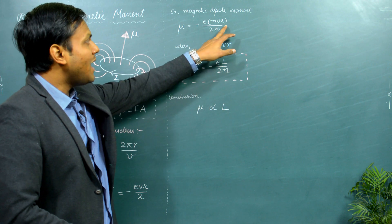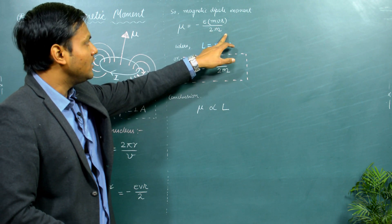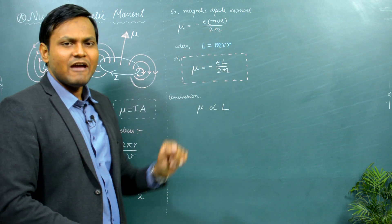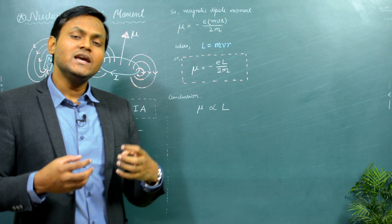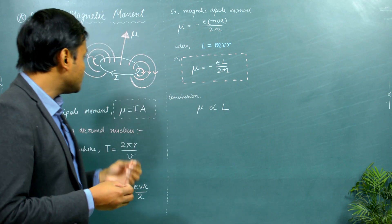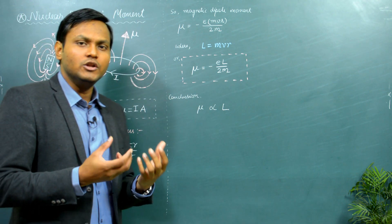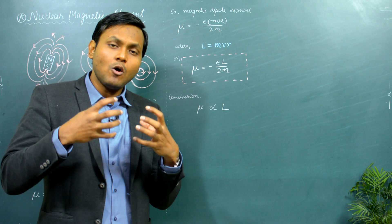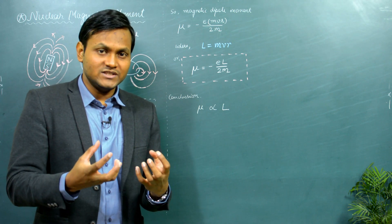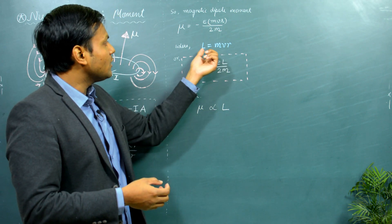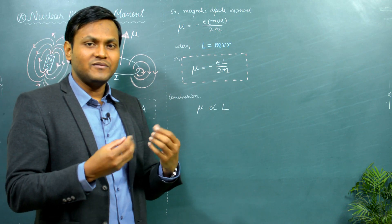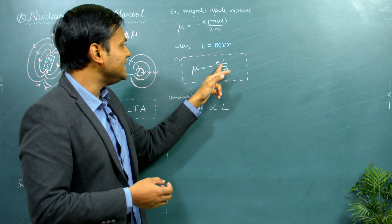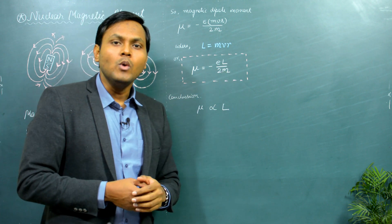If you multiply the mass of the electron in the numerator and the denominator, you end up getting -emvr/2m. Now mvr is nothing but the angular momentum associated with the motion of the electron around the nucleus — since the electron is revolving around the nucleus, it has an orbital angular momentum. If I replace mvr with L, which is the orbital angular momentum of the electron, I end up getting the magnetic moment μ = -eL/2m.